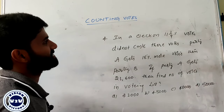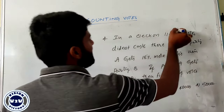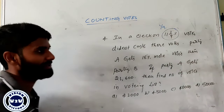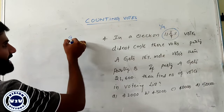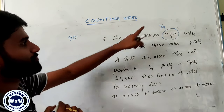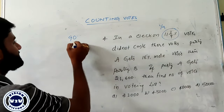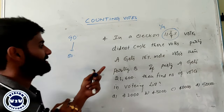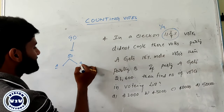In an election, 11 and 1 by 9 percentage votes did not cast the vote. 11.11 percent means the value becomes a denominator of 9. So we have 90 votes. Out of 90 votes, 1 by 9 votes did not cast their vote, meaning 80 votes only are casting. These votes can be distributed between party A and party B.